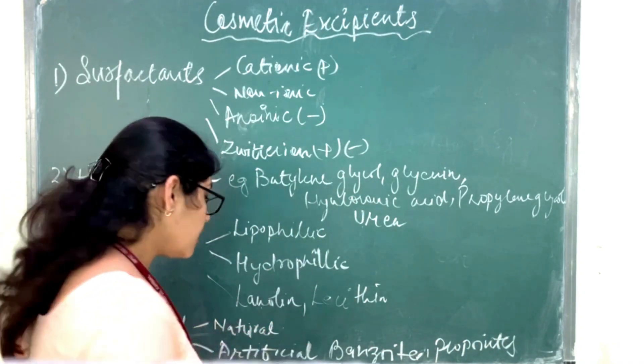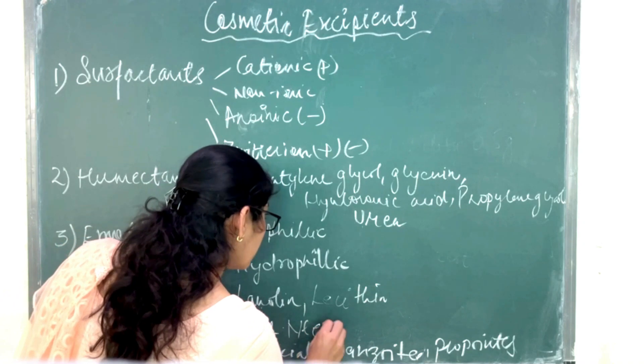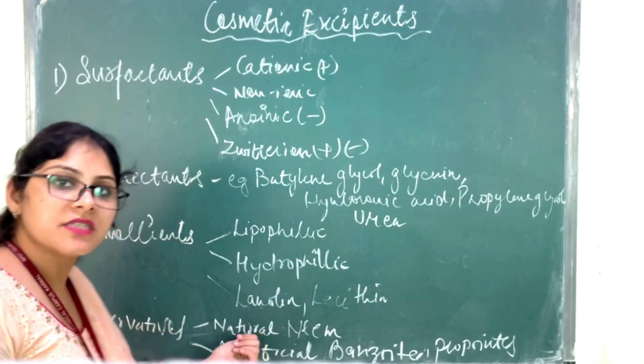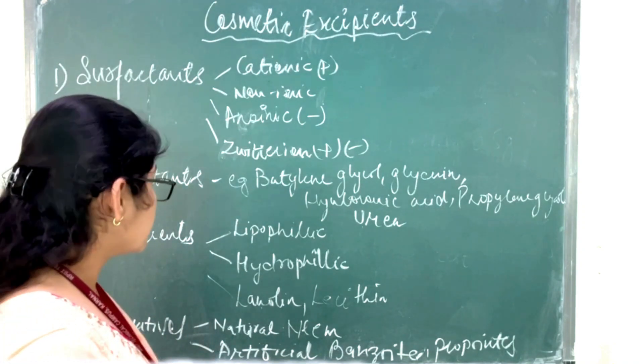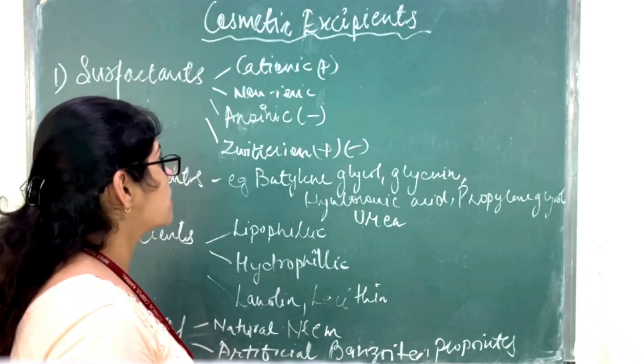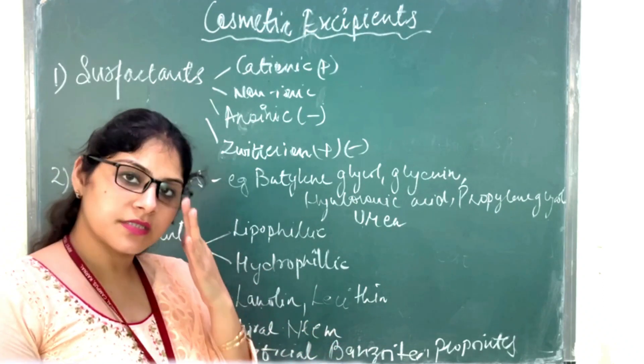And natural, they are neem oil or any other oil which has antibacterial activity also, and we can use it as a preservative. So these are the different excipients which are used in the cosmetic products. This is all about the cosmetic excipients. Thank you.